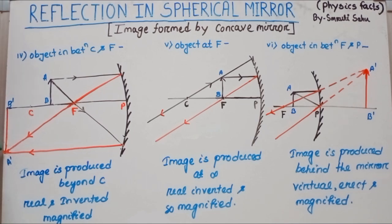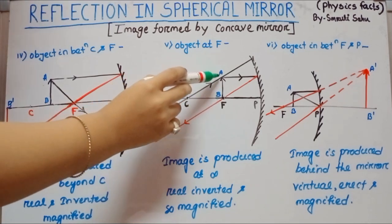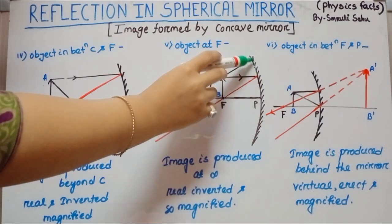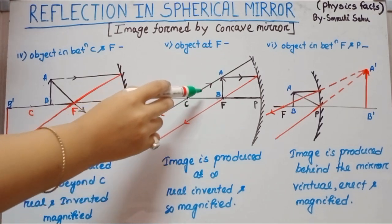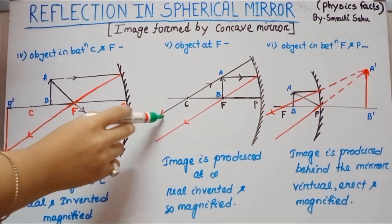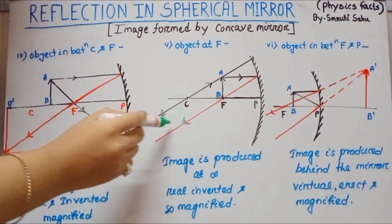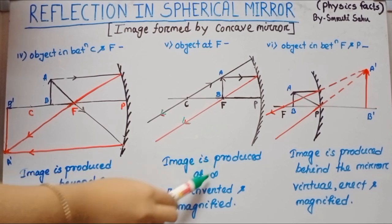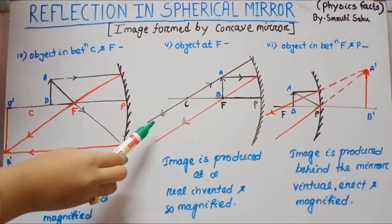Next case: object is at focus F. Consider one incident ray parallel to the principal axis — after hitting the concave surface and reflecting, that ray goes through focus. Another incident ray goes through the center of curvature and retraces its path. These two reflected rays meet at infinity, so the image is produced at infinity. The image is real, inverted, and highly magnified.